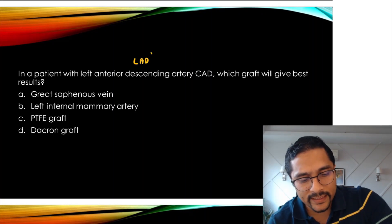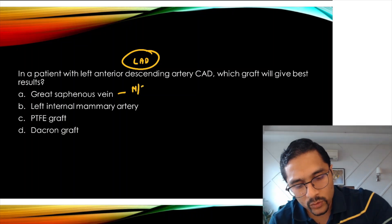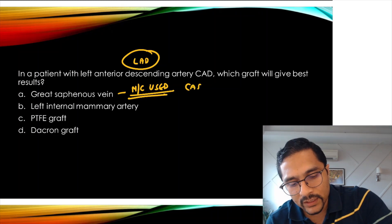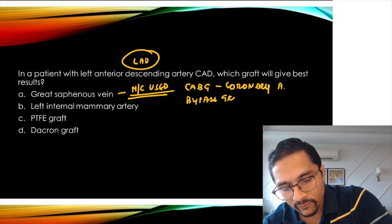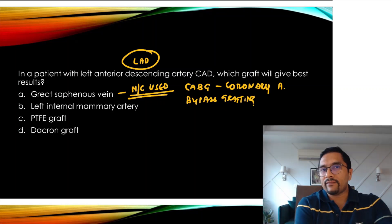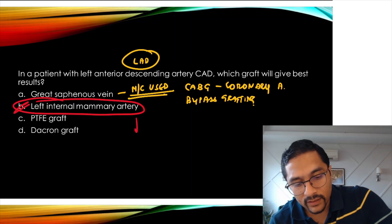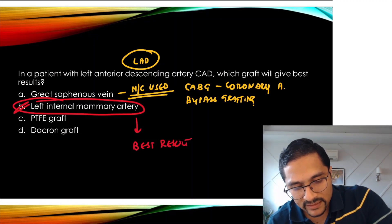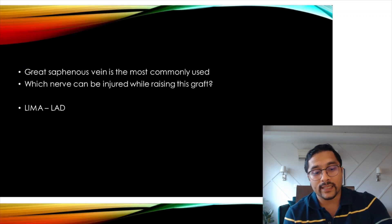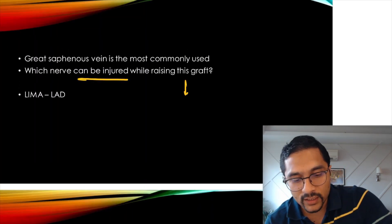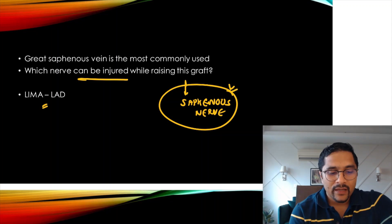For LAD — left anterior descending artery — coronary artery disease: great saphenous vein is the most commonly used graft for CABG (coronary artery bypass grafting), but for the LAD, the left internal mammary artery gives the best results. The best results these days come with internal mammary artery grafts. A question asked last year: which nerve can be injured while harvesting the great saphenous vein graft? The saphenous nerve.